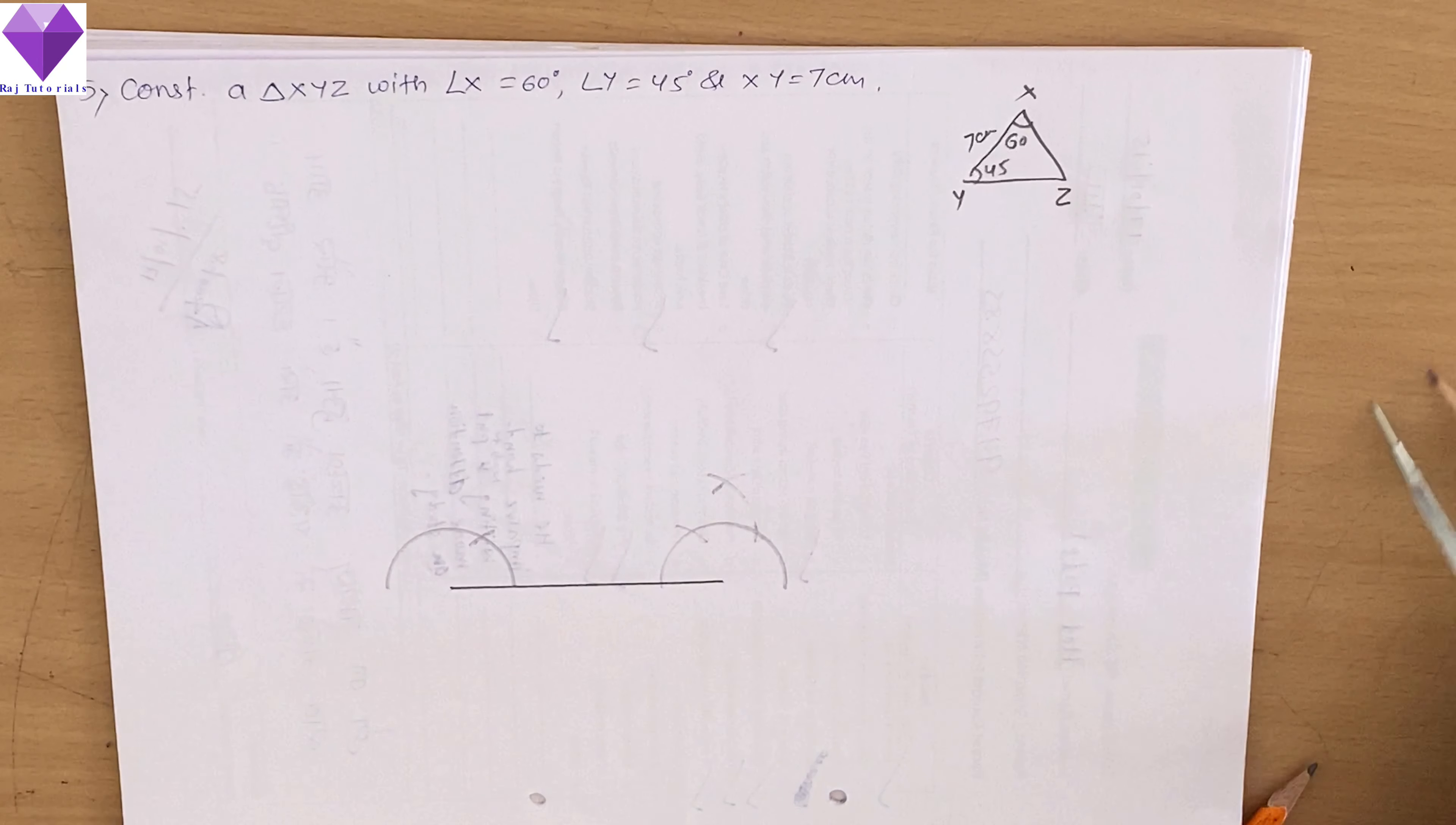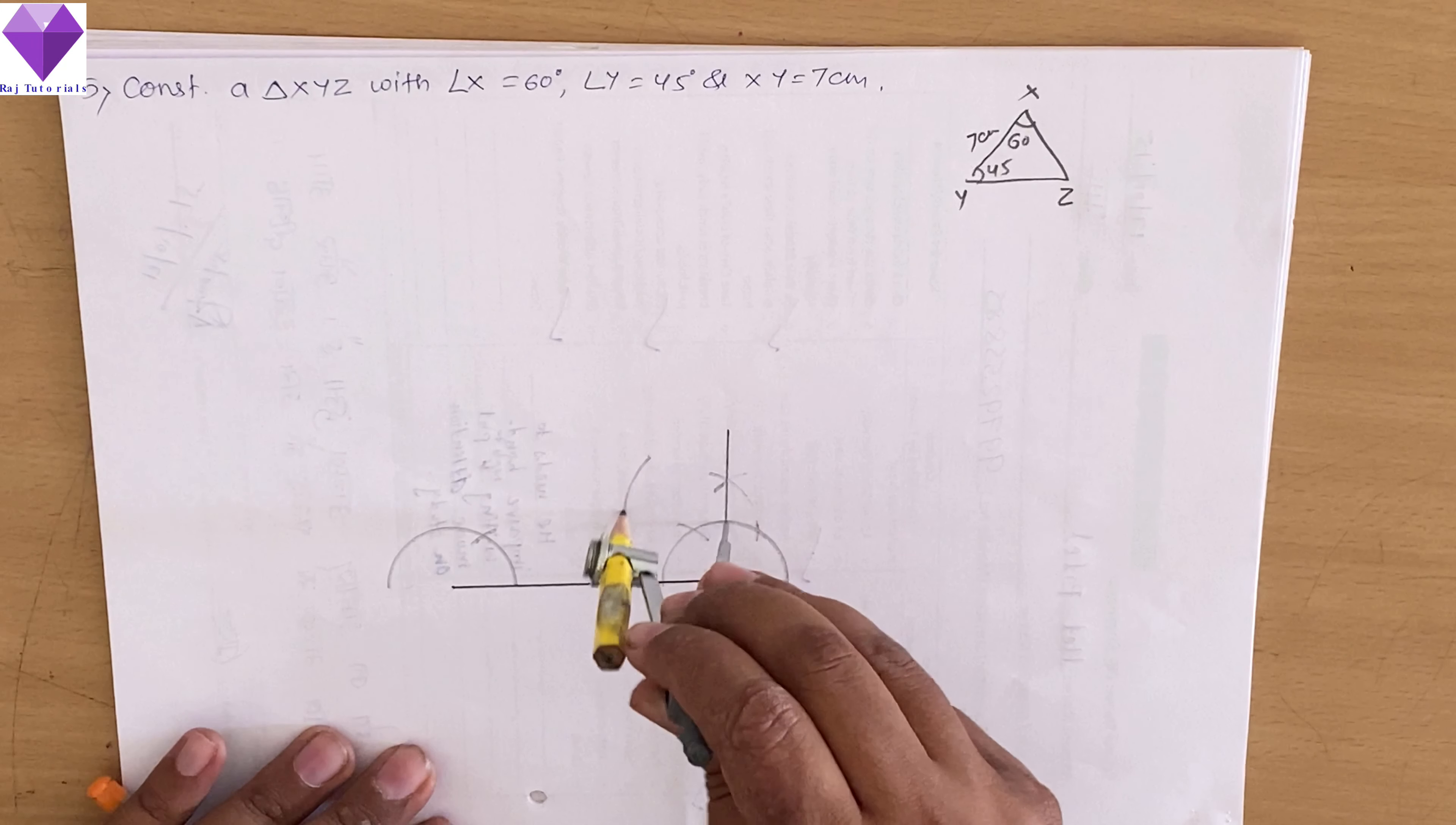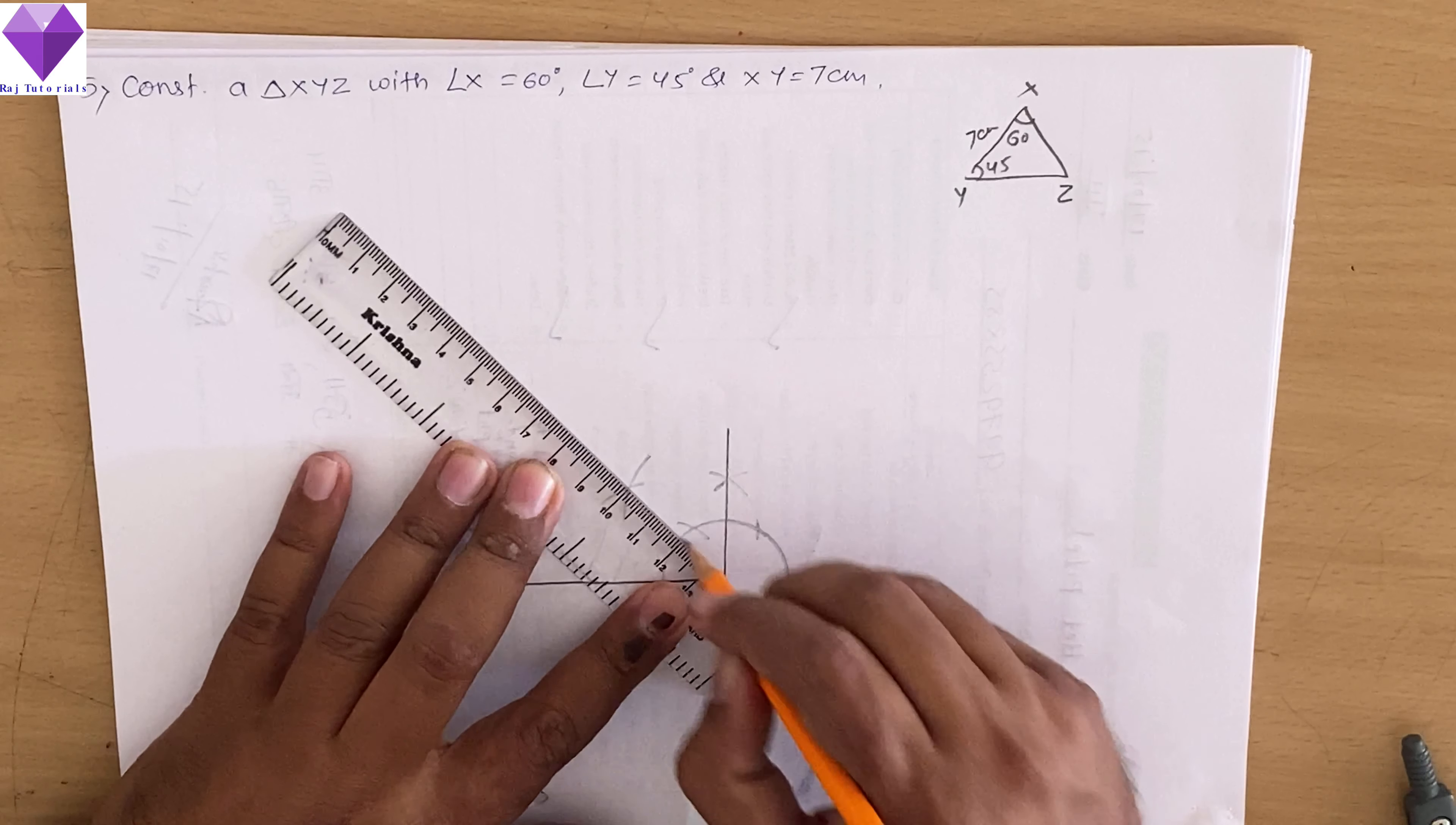Now 90 degree I will be bisecting to get my 45 degree. So this line only I am making that much only because I want a small part of that. Now with 90 as center 1 R and with 0 degree as center 1 R. So I have got my 45 degree.